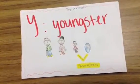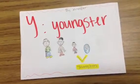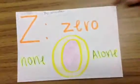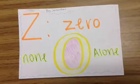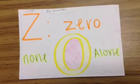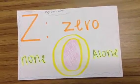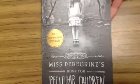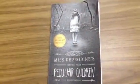Y. Young — Jake is a youngster, a young person, but he is very mature for his age. Z. Zero people believe Jacob about the peculiar children. When Jacob was young, he didn't believe his grandfather's stories either. That's Miss Peregrine's Home for Peculiar Children. See you soon.